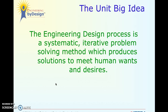The unit big idea: the engineering design process is a systematic, iterative problem-solving method which produces solutions to meet human wants and desires. We went over the engineering design process before spring break and we're going to have a few more brain refreshers as the week moves along. It's systematic — we follow a system. Iterative is an important word; it means a continuous loop. It's a problem-solving method, and everything is trying to solve problems to help our wants and desires.